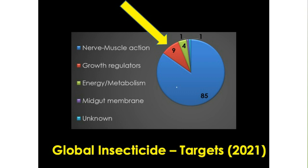A question came in from Daryl asking whether these rates are okay on greens or just tees and fairway-height turf. Our trials are primarily on fairway-height turf. We have applied it at our research farm to green-tight turf at about an eighth of an inch, and I have not seen any phytotoxicity issues whatsoever with this product.